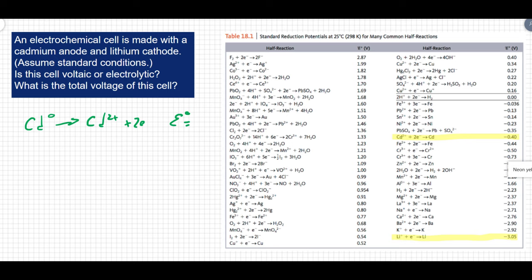So my standard potential for that process would be positive 0.4 volts. Lithium is reducing. Lithium plus, plus an electron is going to go to lithium neutral with the standard potential equal to negative 3.05 volts.